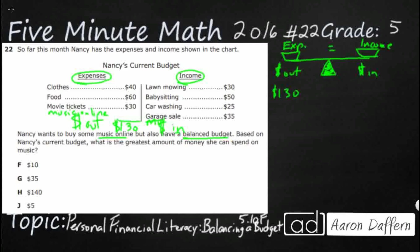And then her income — she's doing quite a bit, so good for Nancy. We've got $5 and $5 is $10. Let's add these up: we've got $4, that's $9, that's $11, that's $140. So she has $140 in income.